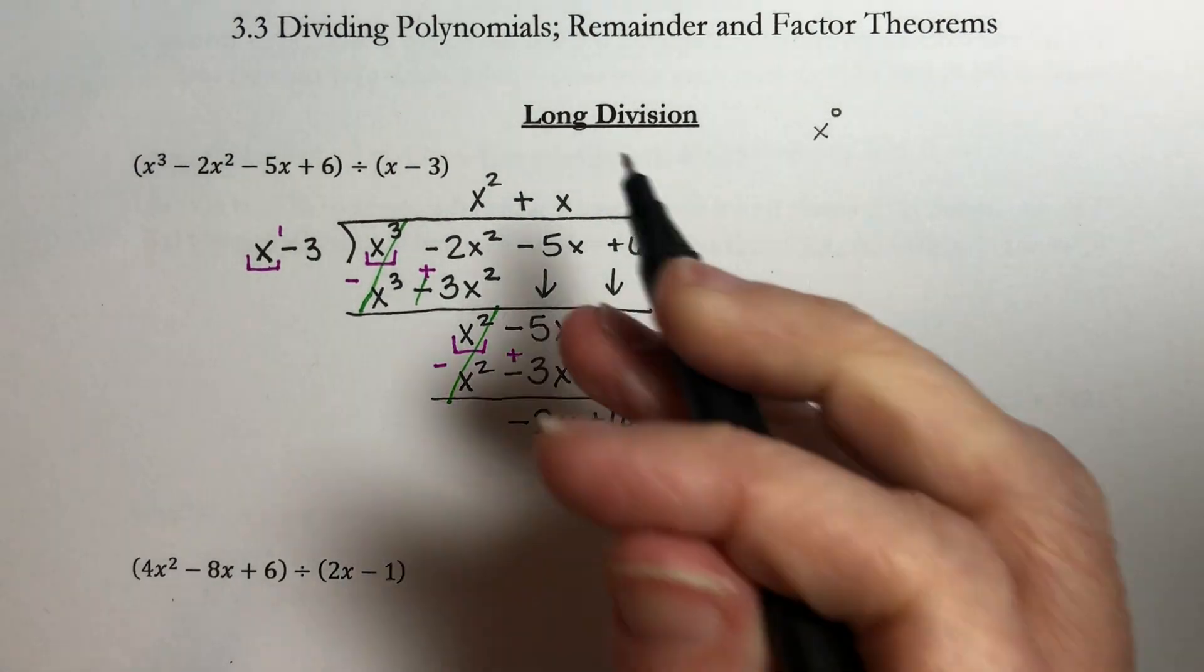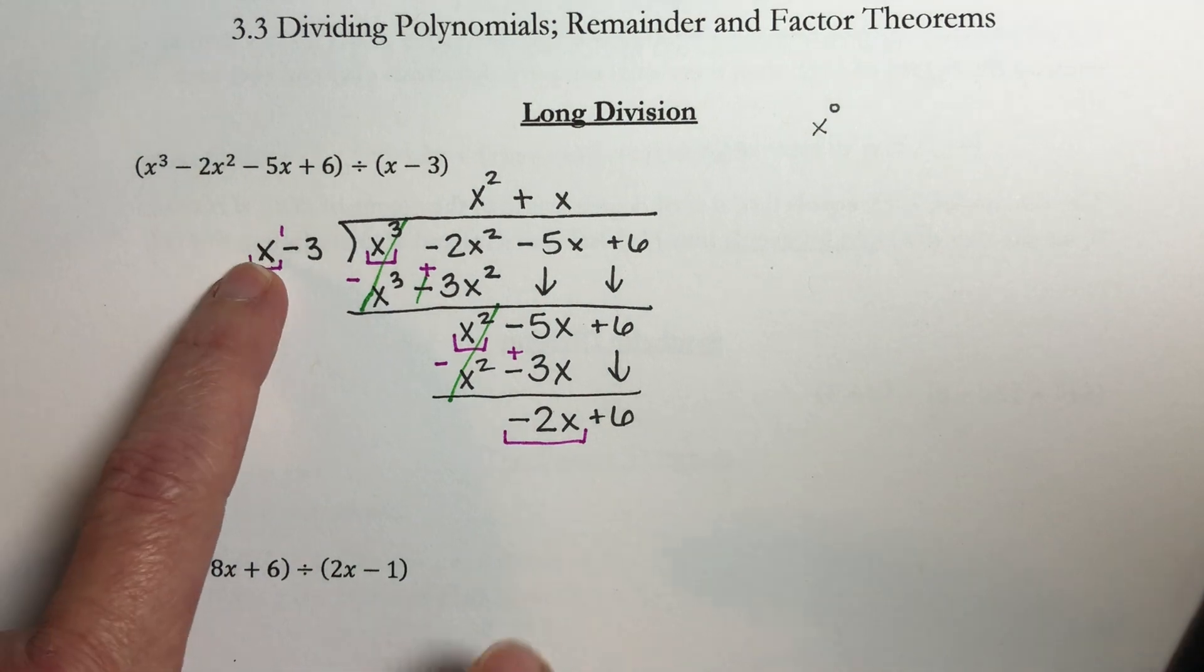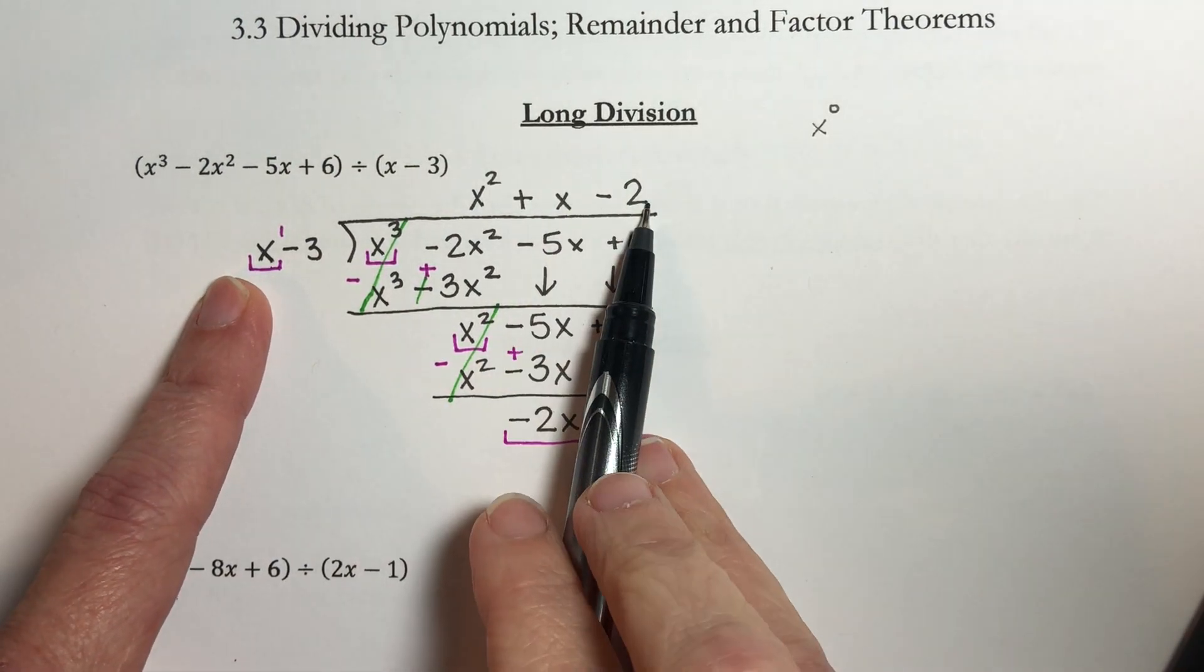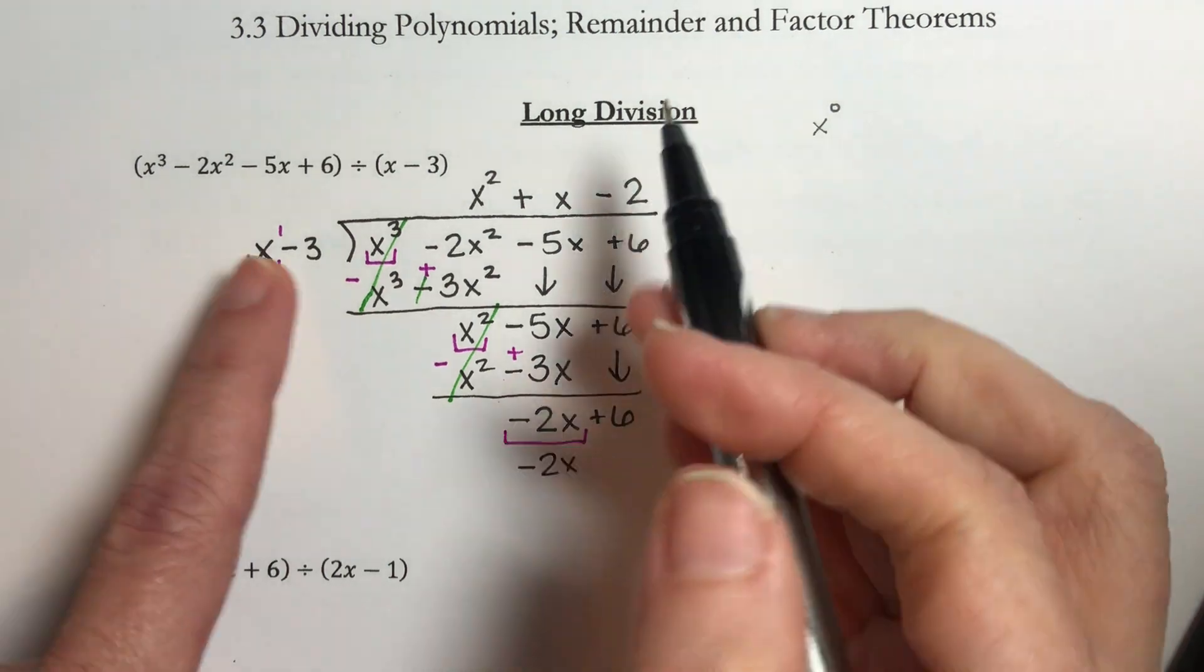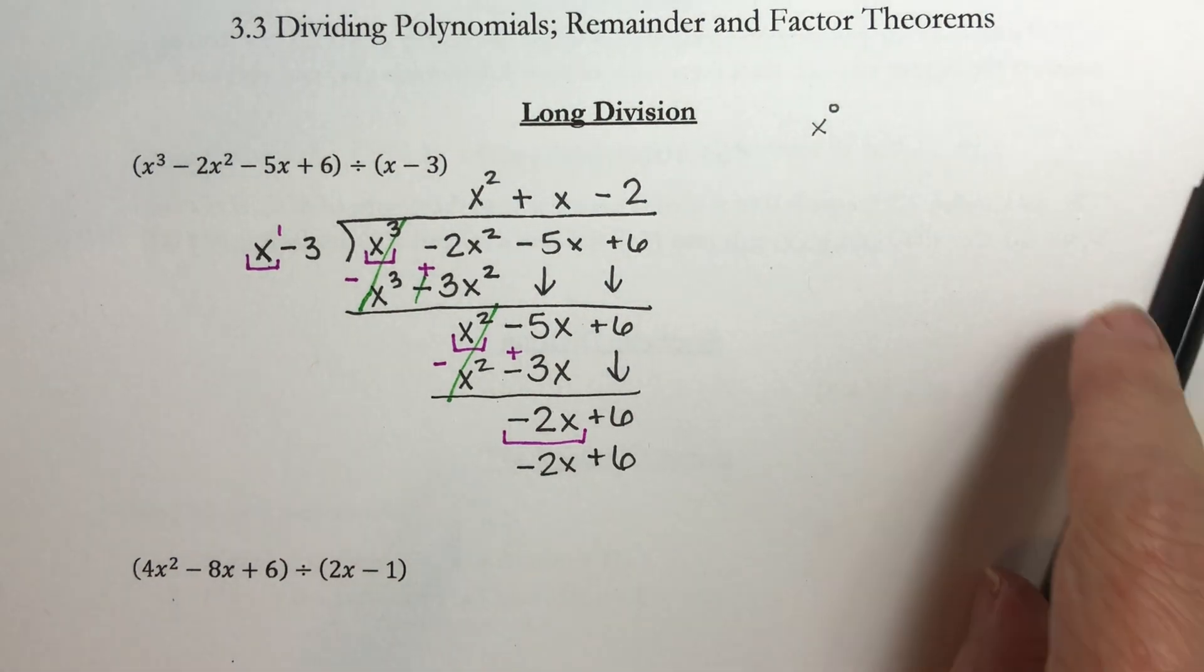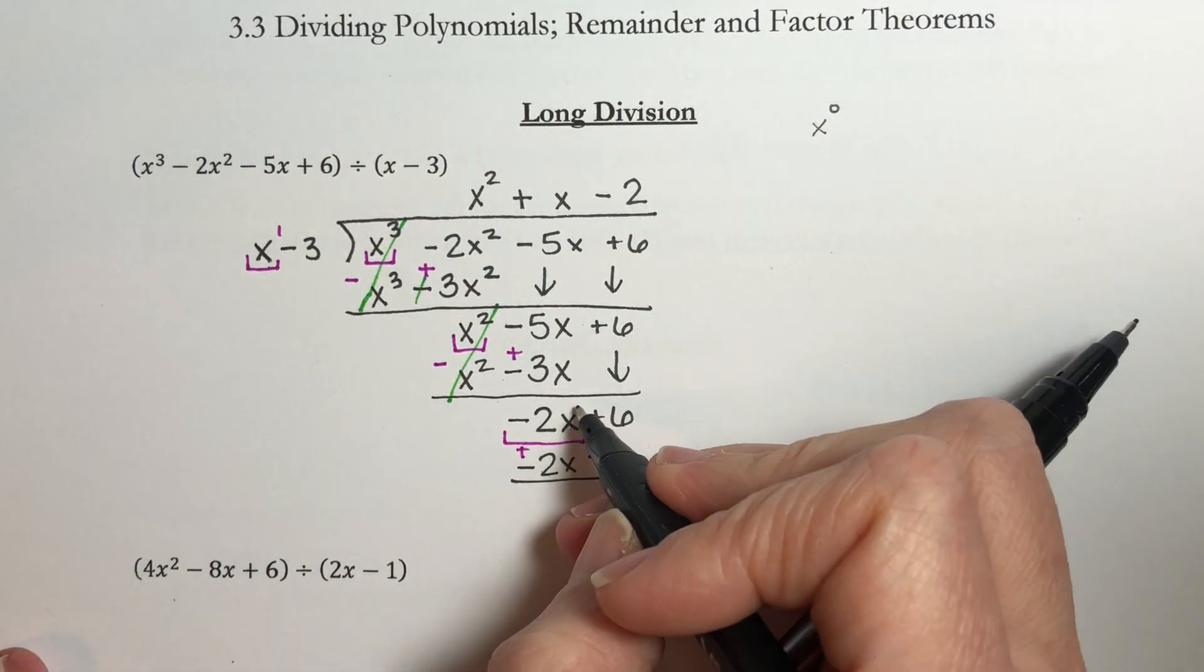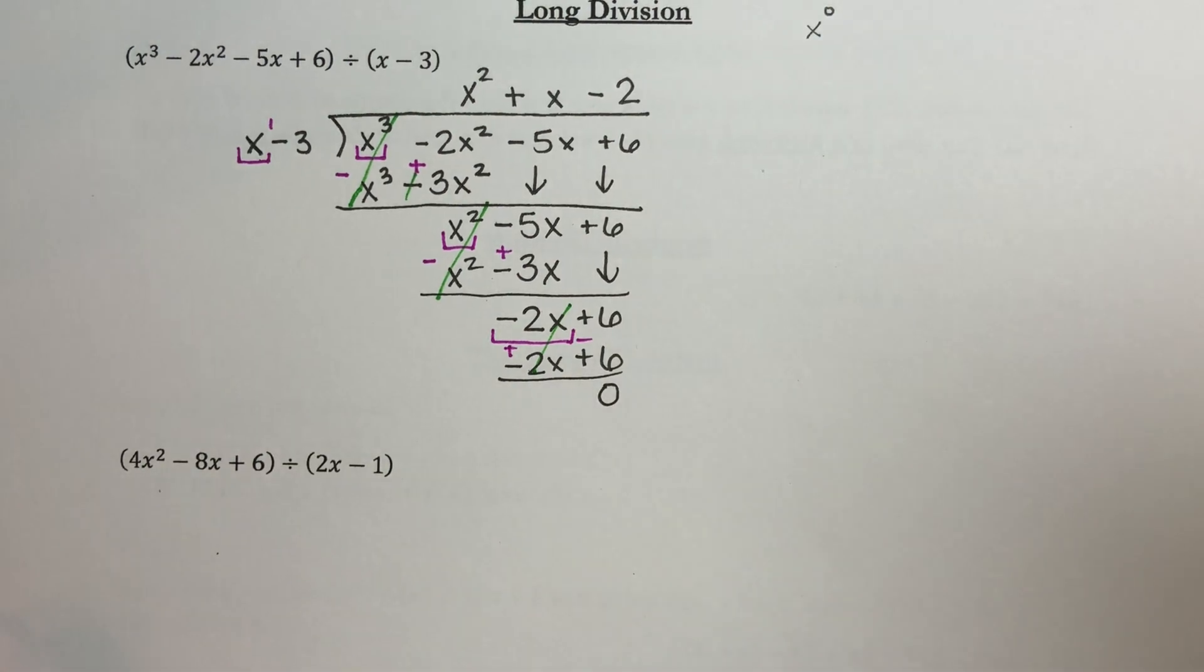Now do this one more time. I want this x to become a negative 2x. So what do I need to multiply this by to get to here? Well I need to multiply it by a negative 2. So I put minus 2 right here. And now take this negative 2 and distribute it through here. Negative 2 times x is negative 2x. Negative 2 times negative 3 is positive 6. Now let's change our signs. So that's a plus, that's a minus. Our first term cancels out as it should. And then it so happens that our second term or our last one cancels out as well and that's a zero.